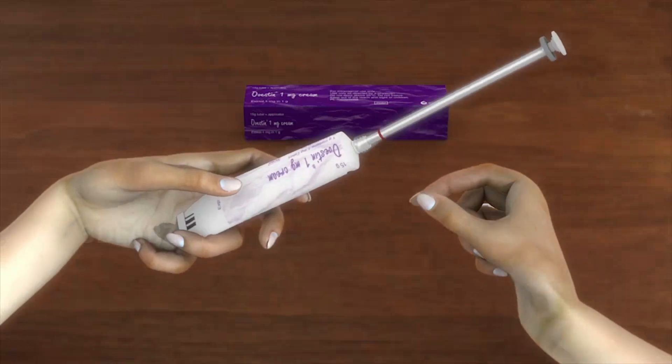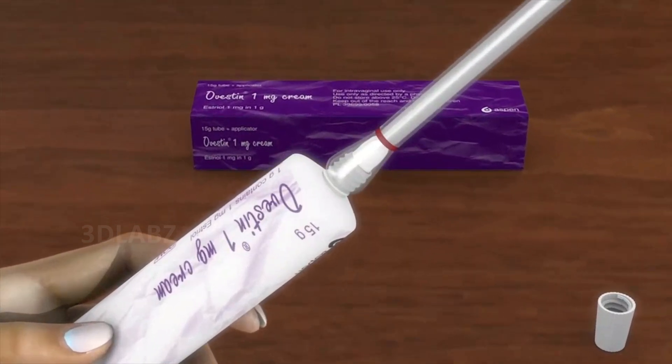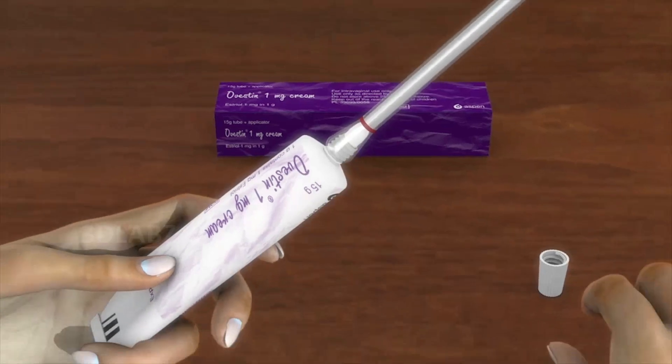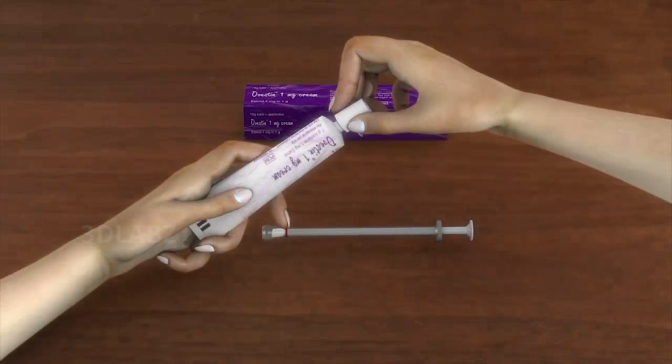Step 3. Squeeze tube slowly to fill the applicator with the cream until the plunger stops at the red ring on the barrel. You now have the correct amount of cream inside the applicator. Carefully unscrew the applicator from the tube and put the cap back on the tube.